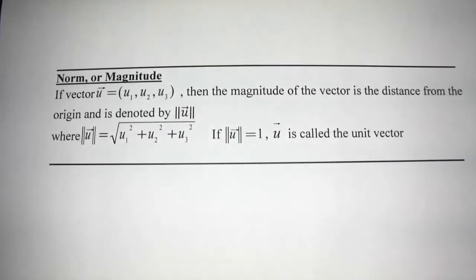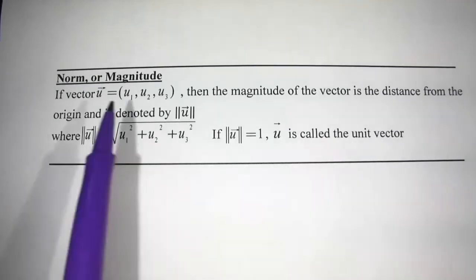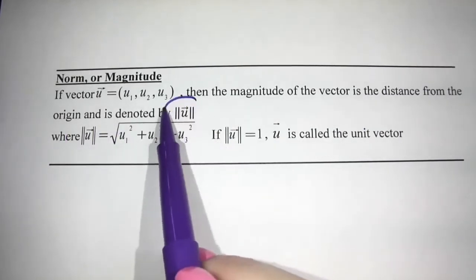So first thing is norm or magnitude. Norm is an older word. Most profs tend to use magnitude now. But to calculate the magnitude of the vector, it's the distance from the origin and we denote it with two lines.